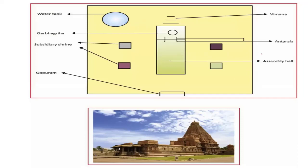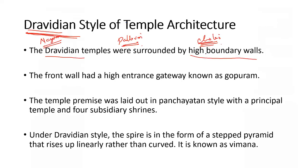We can also see sub-shrines, a water tank, and the Gopuram. The wall surrounding the temple is the boundary wall present in Dravidian style of architecture. In Nagara style of architecture, the boundary wall was absent. However, in all south Indian temples the boundary wall is present, which is a unique feature of the Dravidian style.